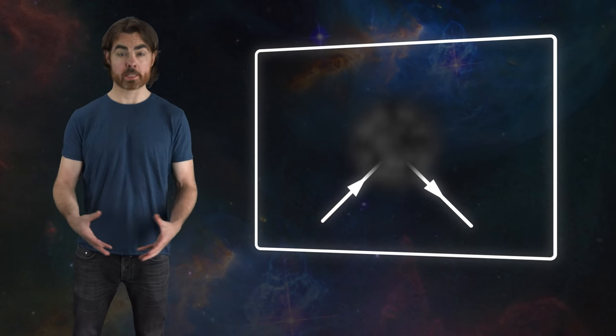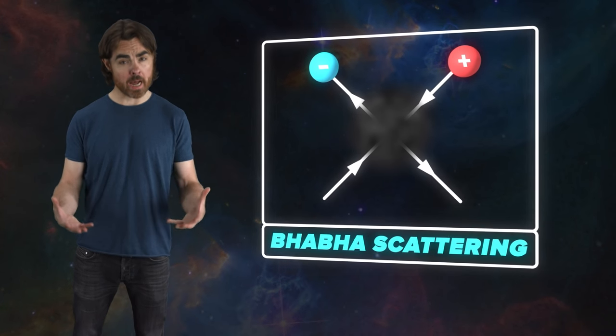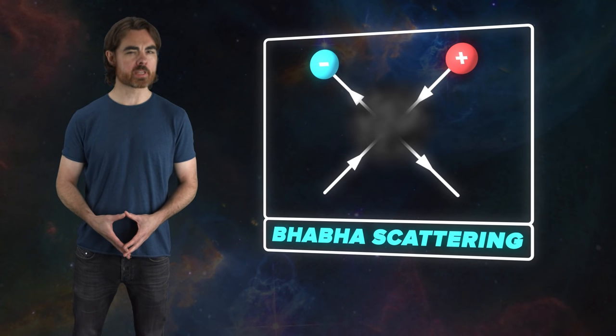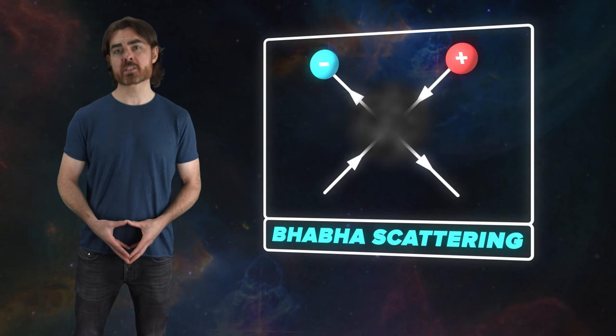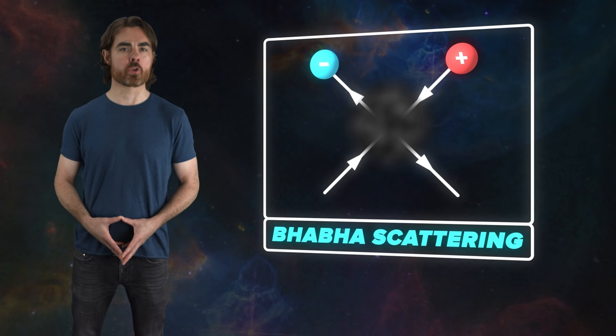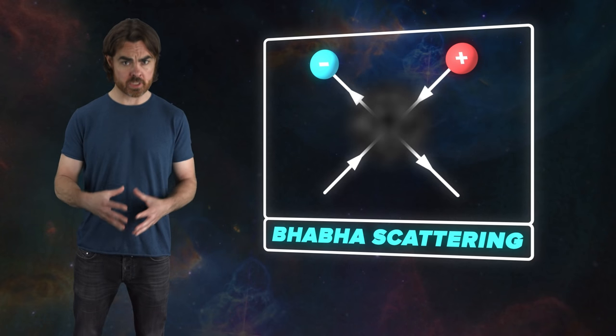But for now, I want to give you a chance to play with Feynman diagrams yourselves. So I have a challenge question for you. When an electron and a positron interact electromagnetically, we call it Barber scattering. It's an interesting case. For instance, the most important Feynman diagrams for Barber scattering are the two cases involving a single virtual photon, and they include two vertices each.